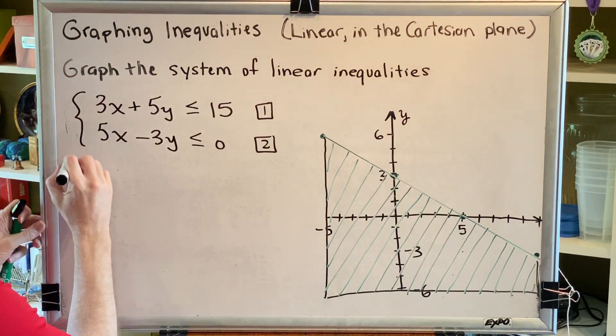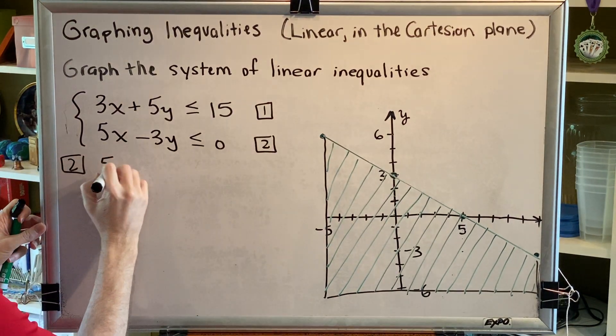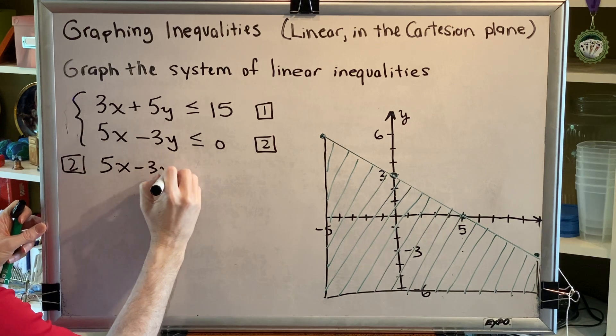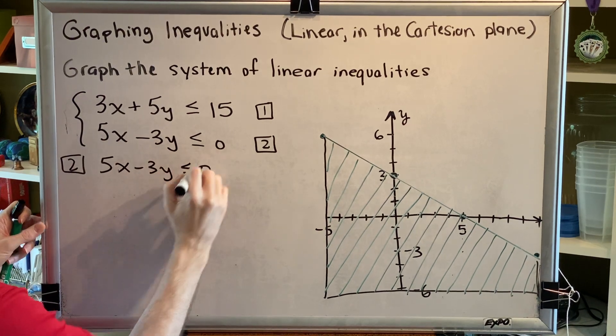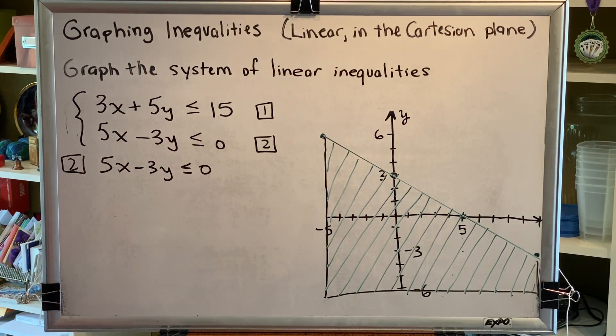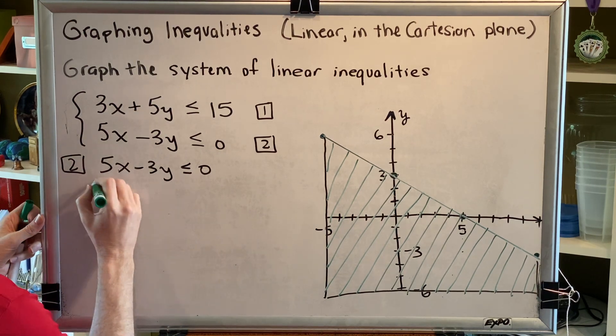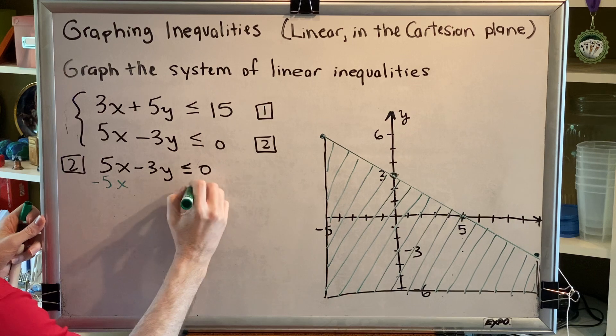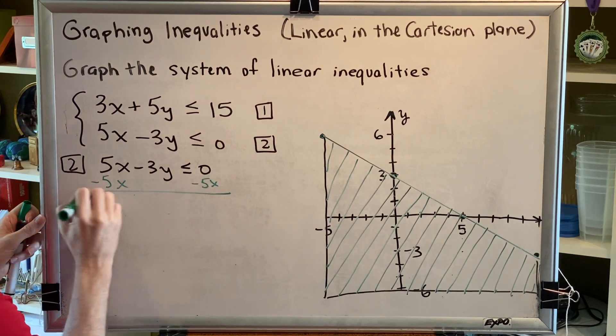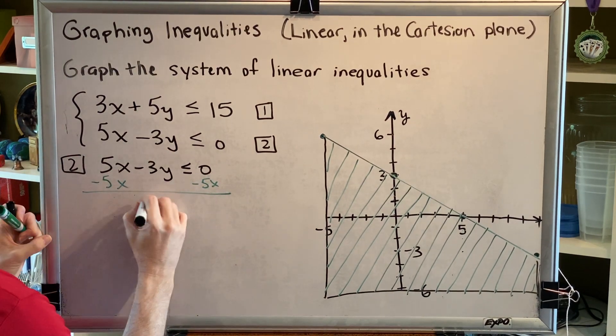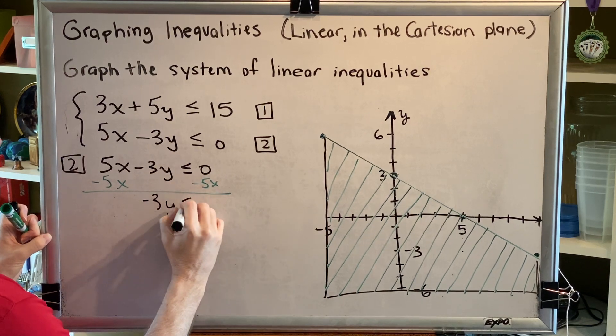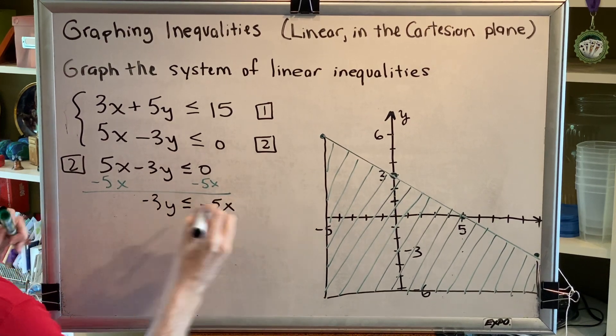Second inequality: 5x minus 3y is less than or equal to 0. The way we're going to solve this is very similar to what we did a moment ago. We're going to subtract 5x on both sides, and that's going to give us negative 3y is less than or equal to negative 5x.